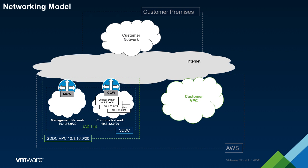Looking more closely at the SDDC, we see that from a network perspective, it is divided logically into two parts: a management network and a compute network. Each of these respective networks are bordered by an NSX edge gateway which has its uplink interface attached to a public subnet within the VPC and its downlink interface attached to a series of NSX logical networks. These gateways serve as both the north-south edge router for their respective environments as well as a stateful edge firewall. The management network is used by the infrastructure components of the SDDC while the compute network is used by the customer's compute workloads. Following the standard permissions model of the service, the ability to configure the management network is somewhat restricted while there is more flexibility when configuring the compute network.